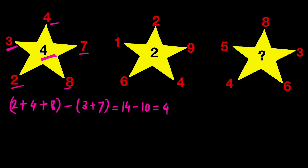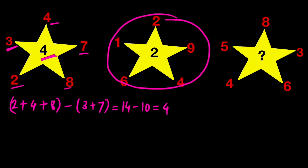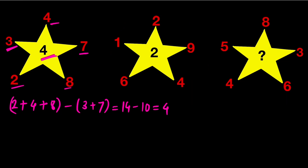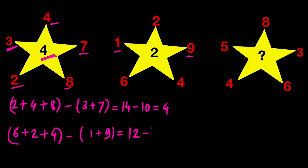Let's check whether this logic works for the second star shape. The even numbers are 6, 2, and 4. The odd numbers are 1 and 9. So 6 plus 2 plus 4 minus (1 plus 9) equals 12 minus 10, which equals 2. Yes, that matches the central number of the second star.